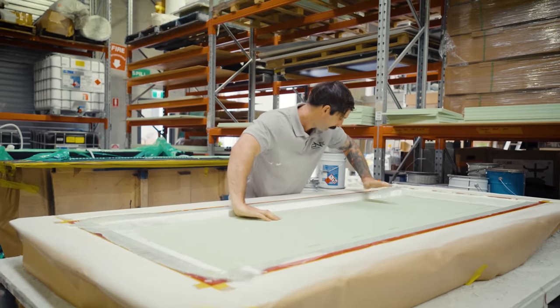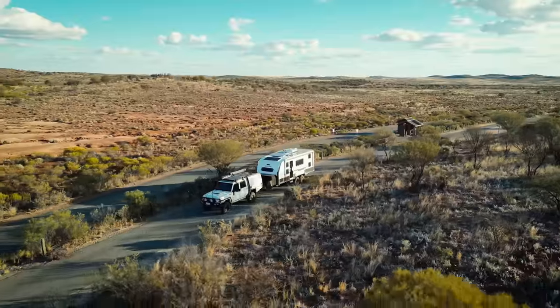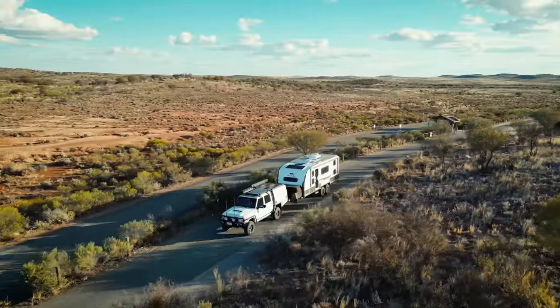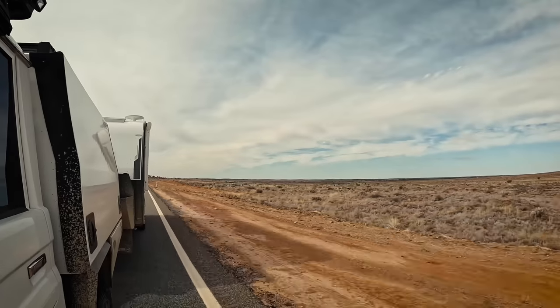The second most important part we get out of the foam core in this structure is that it provides insulation. Now in the harsh Australian environments, it's one of the most important things we're looking for.